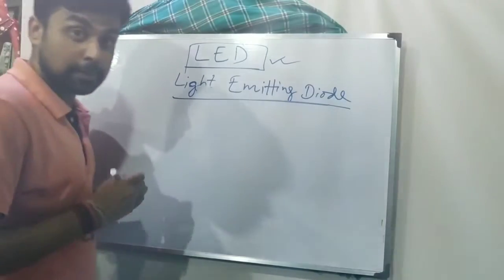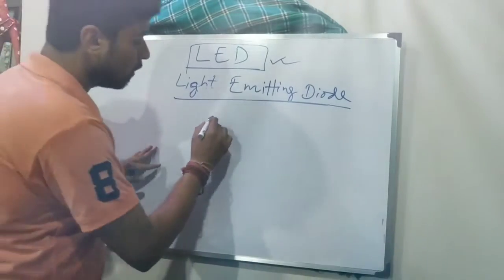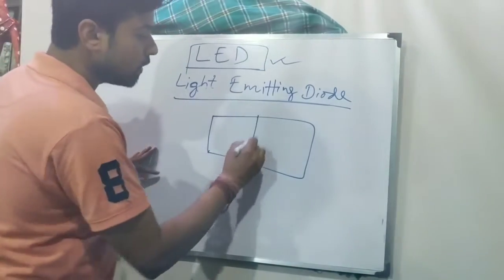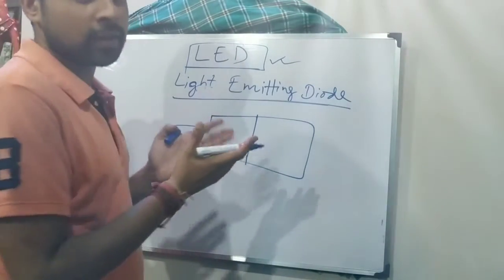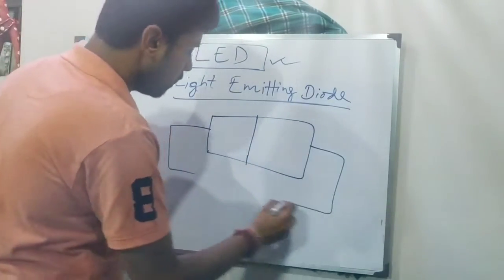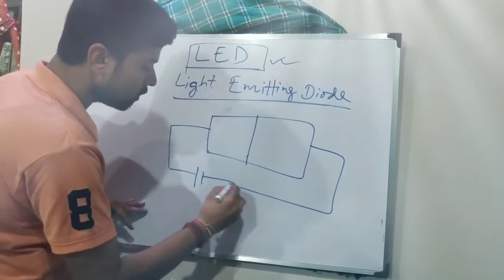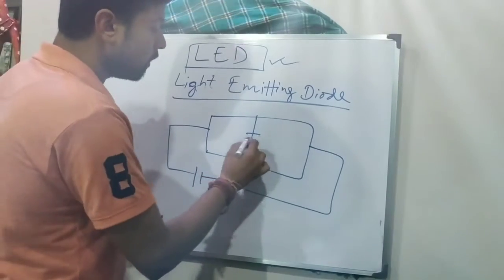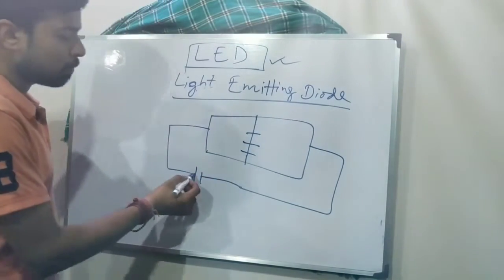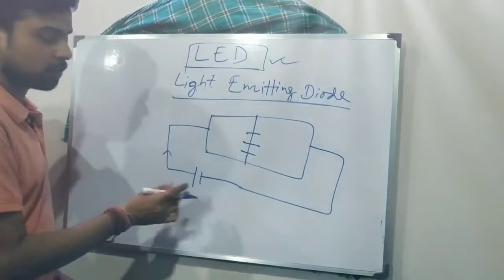So that is why this concept of light emitting diode came into the picture. So what happens in LED? A typical LED or light emitting diode consists of two specialized semiconducting materials. About this semiconducting material, we will be discussing later. But for now, just remember this is a combination of two specialized semiconducting material and inside a certain reaction happens once we are providing an electrical supply.